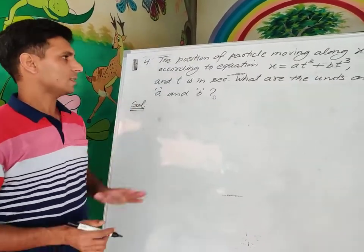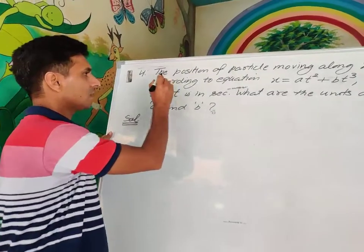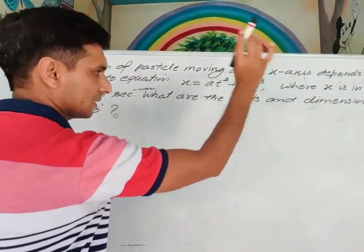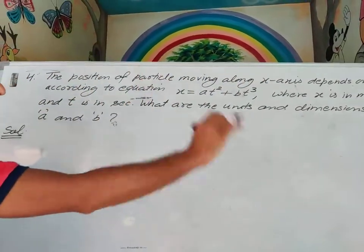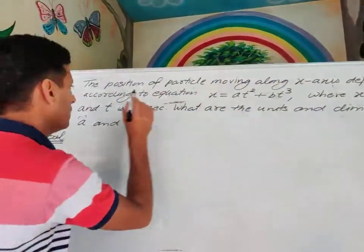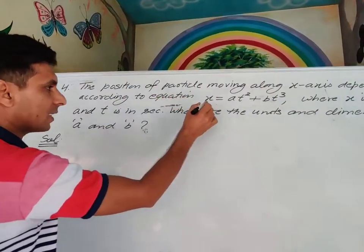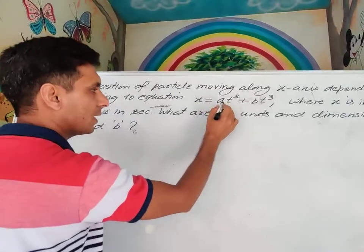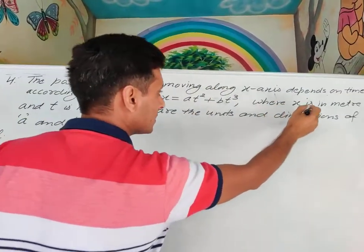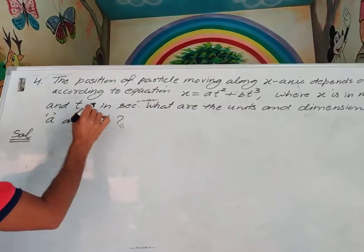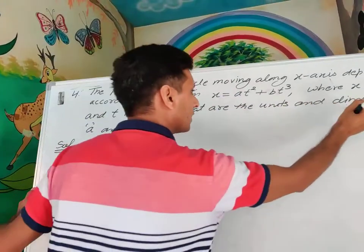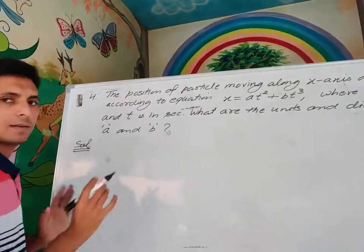Next question: The position x of a particle moving along the x-axis depends on time according to the equation x = At² + Bt³, where x is in meters and t is in seconds. What are the units and dimensions of A and B?